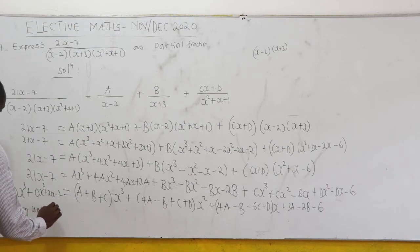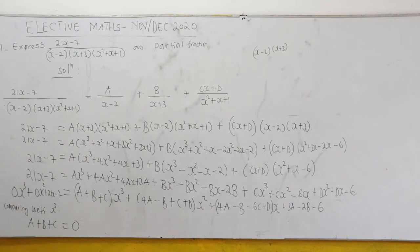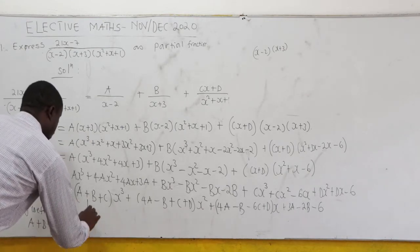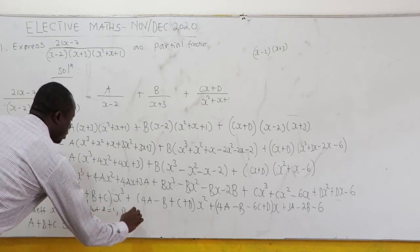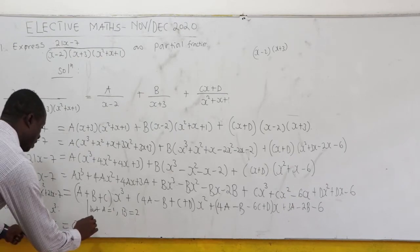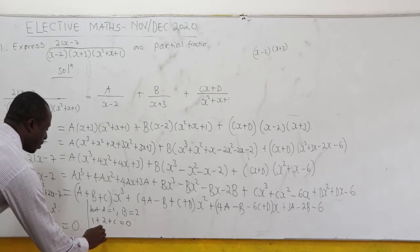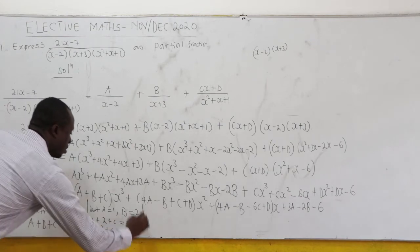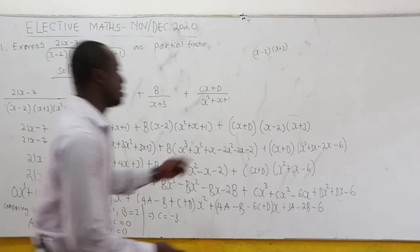Comparing coefficients of x cubed: 0 equals A plus B plus C. Since A equals 1 and B equals 2, we get 1 plus 2 plus C equals 0, so 3 plus C equals 0, giving C equals negative 3.